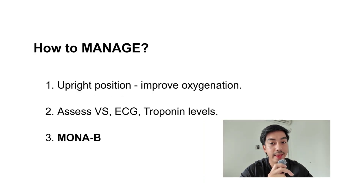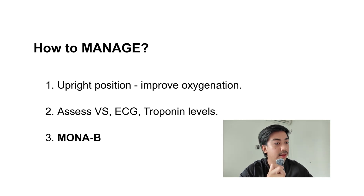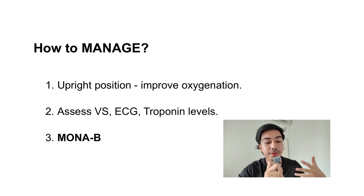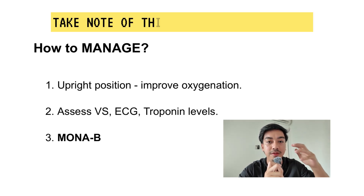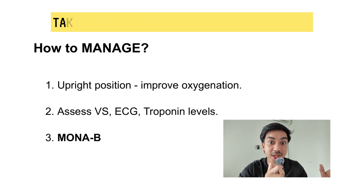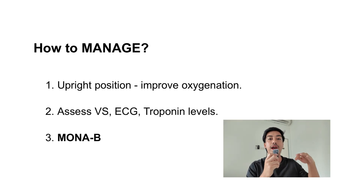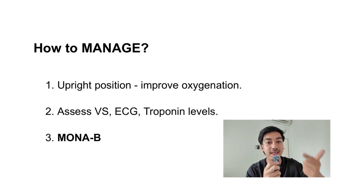How do we manage patients with acute MI? Number one, we have to position them properly — an upright position is needed to improve oxygenation. This is the first thing to do, and it's a very common NCLEX and PNLE topic. Number two, we need to assess vital signs — pulse, respiratory rate, temperature — and check the ECG because it's a heart problem, as well as troponin levels.